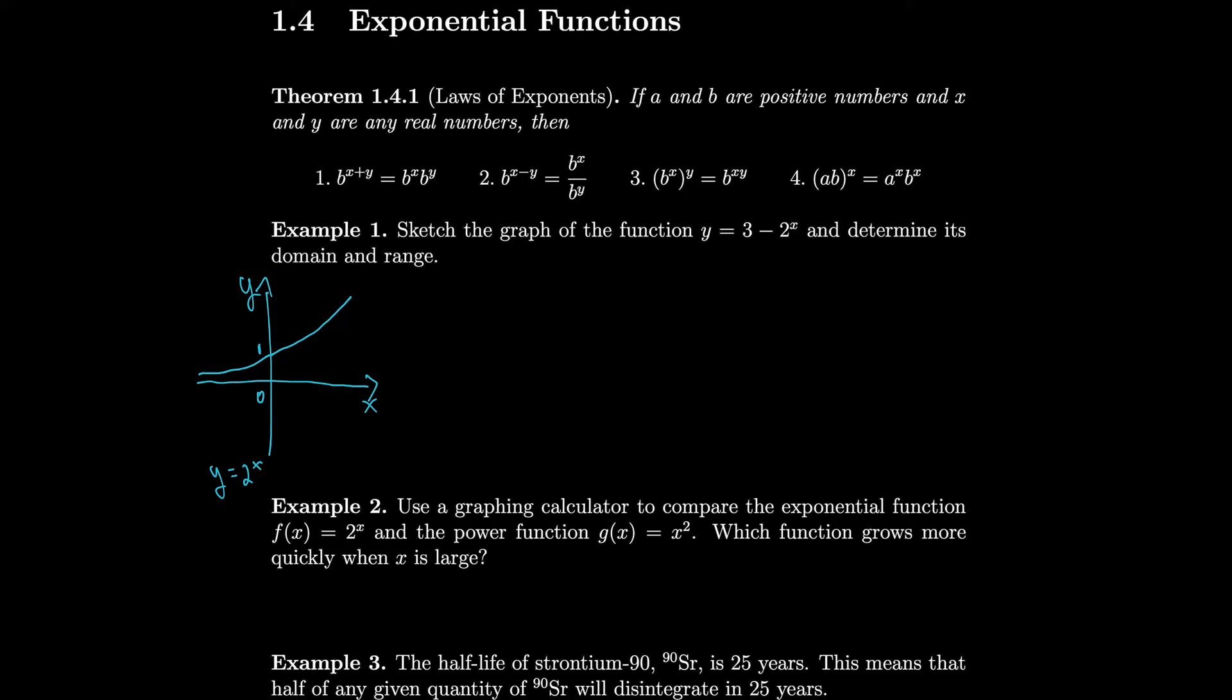If we want the graph of y equals minus 2 to the x, then all we have to do is flip this thing upside down. So this would be at minus 1 now. And that's y equals minus 2 to the x. Finally, we want to make this into y equals 3 minus 2 to the x. So we should add 3 to this. So we should just move up 3.